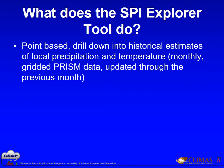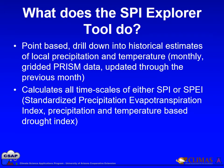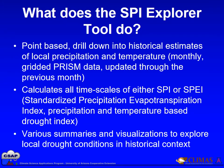The SPI Explorer tool extracts monthly PRISM-based gridded temperature and precipitation time series from a selected point, with data available for all locations within the continental U.S. from 1895 through present. The tool then calculates SPI or SPEI values for all timescales from one to up to 60 months. The Standardized Precipitation Evapotranspiration Index is a newly added precipitation and temperature based drought index. Various summaries and visualizations to explore local drought conditions are then presented on several pages within the tool.